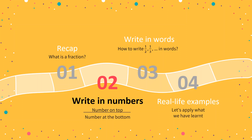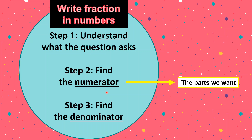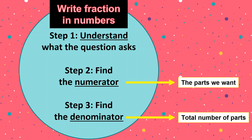Let's jump into the second topic: writing fractions in numbers. We're going to find out what the number on top means as well as the number at the bottom of the fraction. Here are the steps: first, understand what the question asks. Second, find the numerator — the number on top — which represents the parts that we want. Step three, find the denominator — the number at the bottom — which represents the total number of parts.